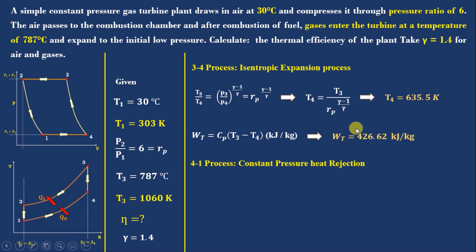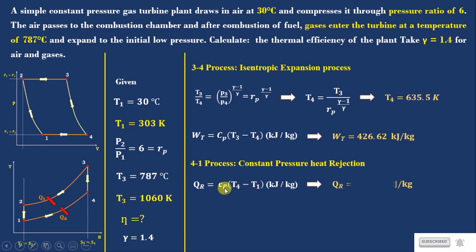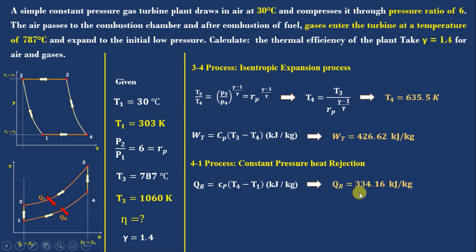Next is process 4-1: constant pressure heat rejection. The amount of heat rejected is: Qr = Cp(T4 − T1). T4 was found and T1 is given, with Cp = 1.005. Qr = 334.16 kJ/kg of air.